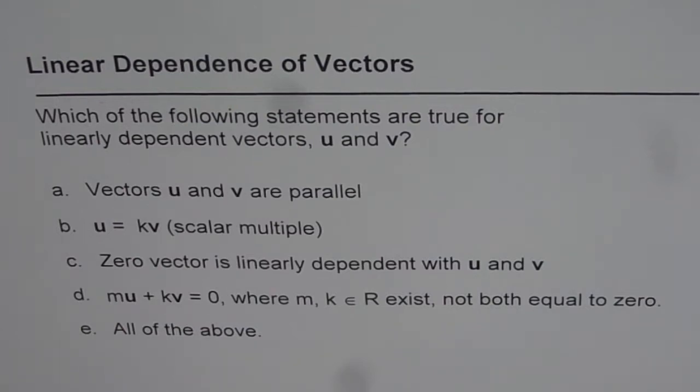The first one is vectors u and v are parallel. Second one is u is scalar multiple of v, which is u equals to k times v.